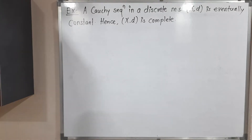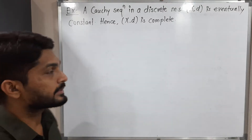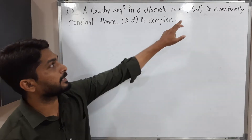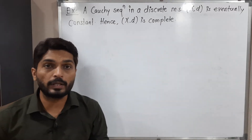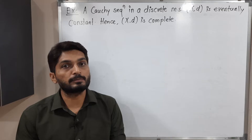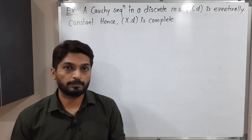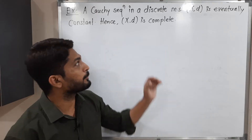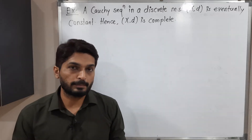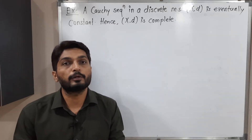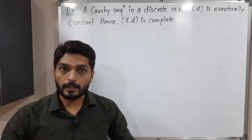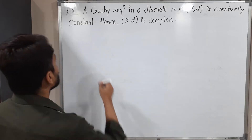Hi everyone. In this video we are going to discuss this example. We have a discrete metric space X_d and we have to prove that every Cauchy sequence in a discrete metric space is eventually constant, and with the help of it we have to prove X_d is a complete metric space. So actually two parts we have to prove, so let us focus on the first part.